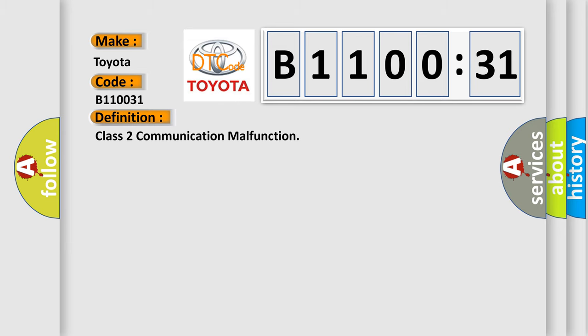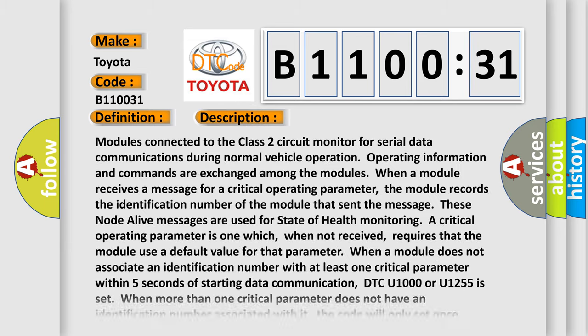The basic definition is class two communication malfunction. And now this is a short description of this DTC code. Modules connected to the class two circuit monitor for serial data communications during normal vehicle operation. Operating information and commands are exchanged among the modules.